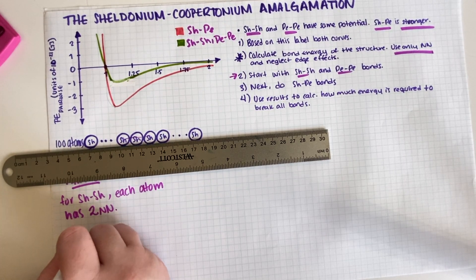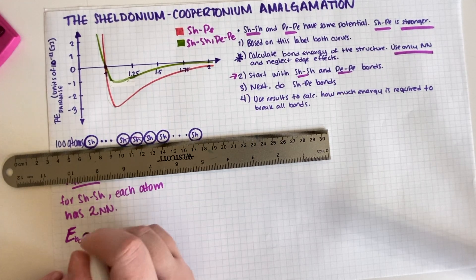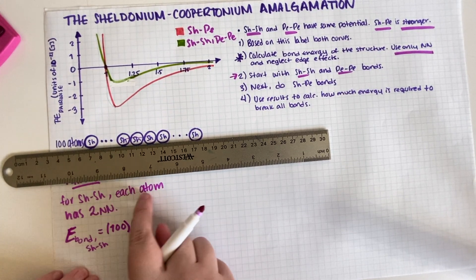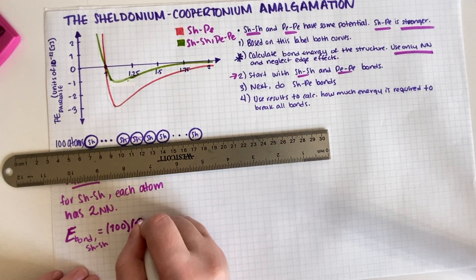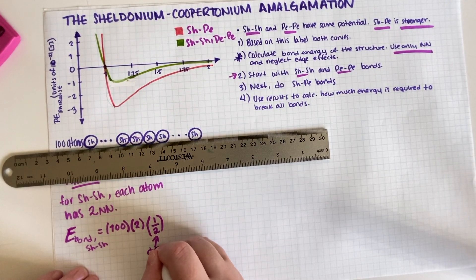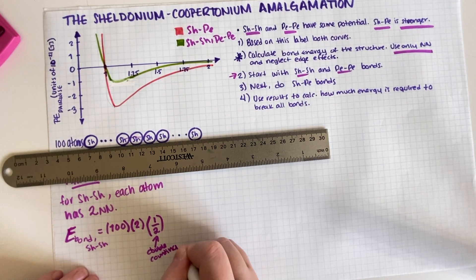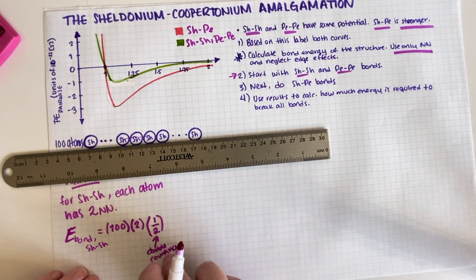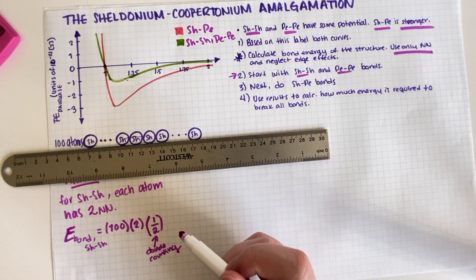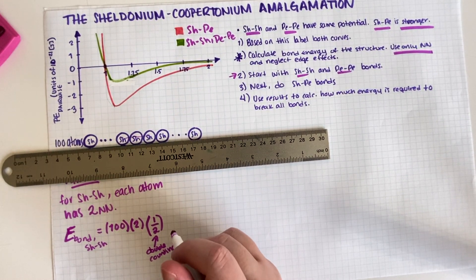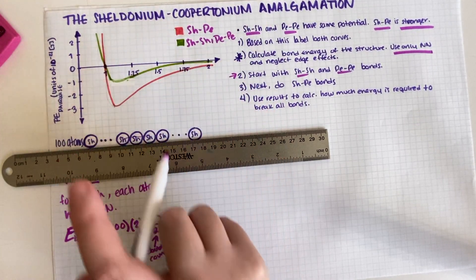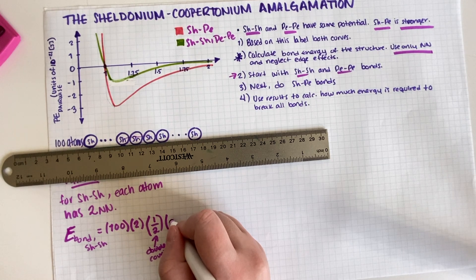So for Sheldoniums, each atom has how many nearest neighbors? Well, if you're this Sheldonium then you have two, two, and so on. So each Sheldonium has two nearest neighbors that are equal, so two Sheldoniums. And the bond energy, E_bond like this, for Sheldonium-Sheldonium is equal to the number of Sheldoniums, so that would be 100, times the number of nearest neighbors which is equal to two.